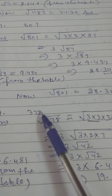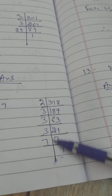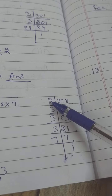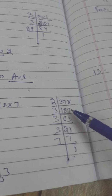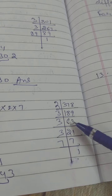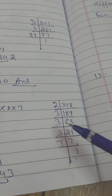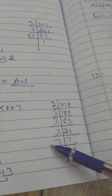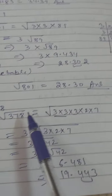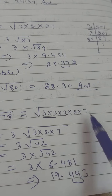Question number 9: 378. Prime factorization of 378: 378 divided by 2 gives 189, 189 divided by 3 gives 63, 63 divided by 3 gives 21, 21 divided by 3 gives 7, 7 divided by 7 gives 1. So we can write 378 as 3 × 3 × 3 × 2 × 7.